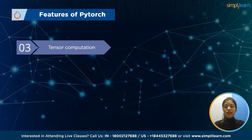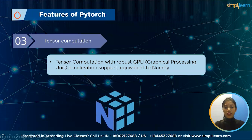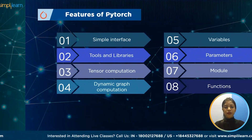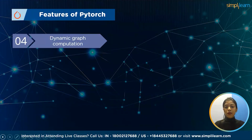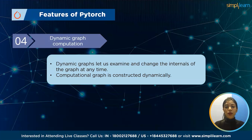Next is tensor computation. PyTorch provides tensor computation with robust GPU (graphical processing unit) acceleration support, equivalent to NumPy. Next, dynamic graph computation: dynamic graphs are adaptable and let us examine and change the internals of the graph at any time. The dynamic graph in PyTorch is constructed dynamically following our declaration of variables, and the graph is rebuilt following each training iteration.